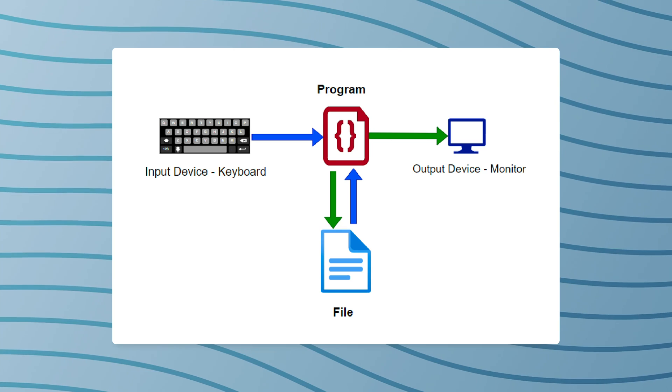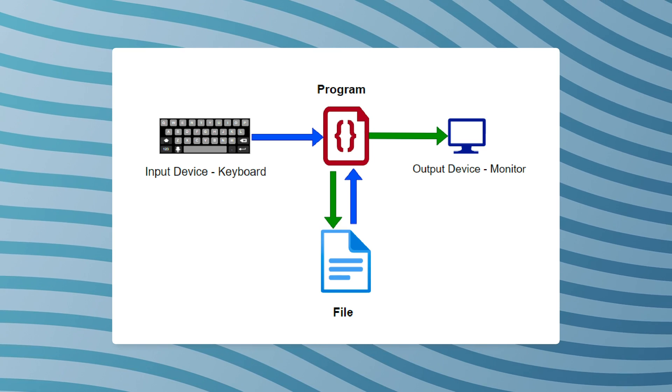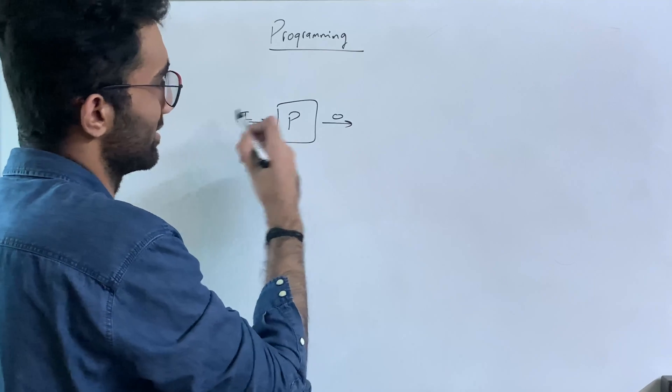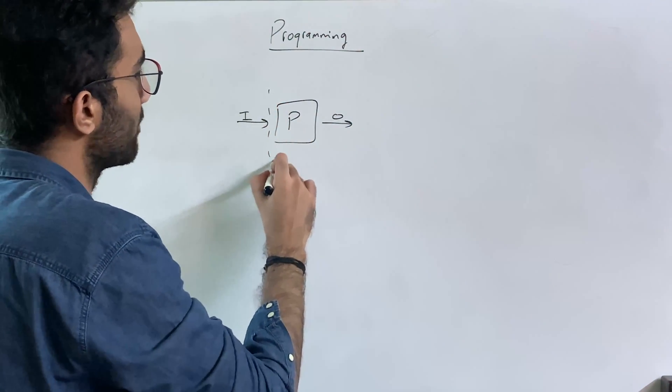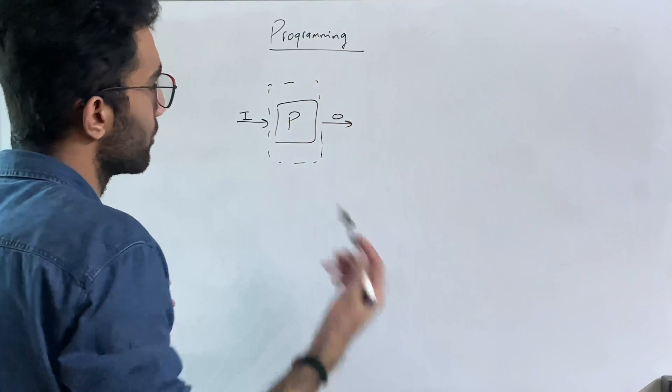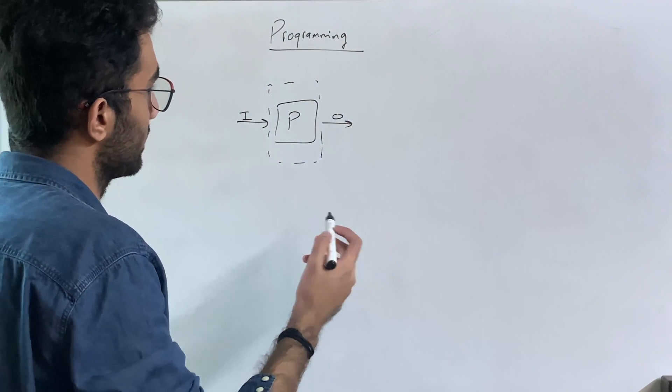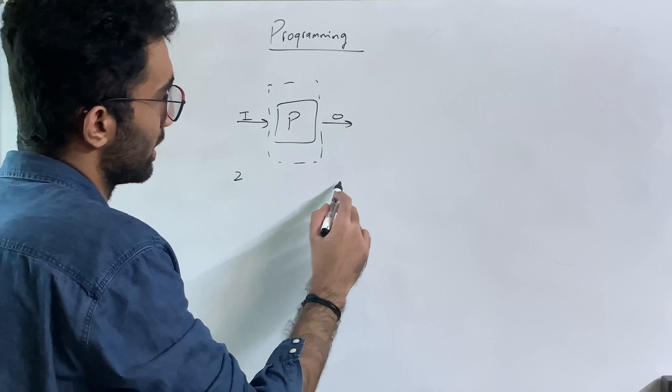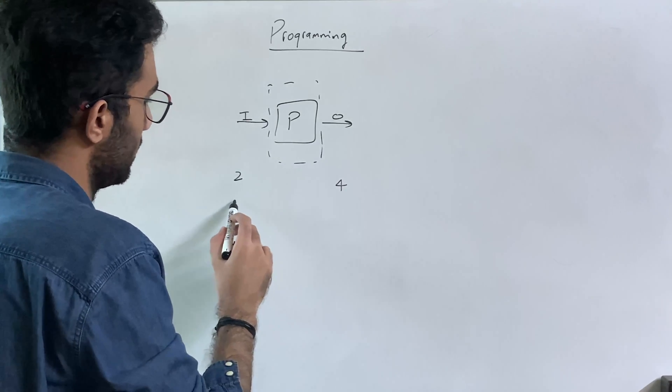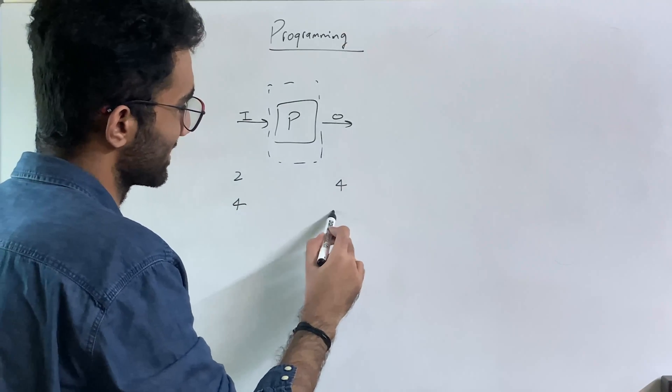Let's say you have a program which takes an input and gives you an output. What this program does to generate that output can be simple or complex depending on the logic. For example, if I give you input as 2 and the output is 4, input as 4, output is 16, input as 8, output is 64.